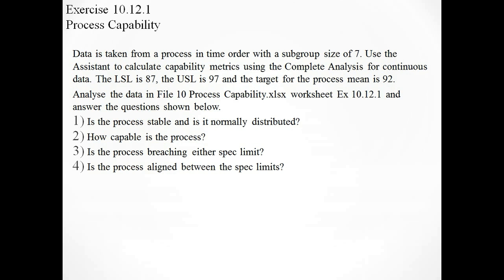Let's have a look at our process capability example question. This time we're taking exercise 10.12.1. And you can download the data set if you want to work along with this as well from rmk6sigma.com. So the scenario is, data is taken from a process in time order with a subgroup size of 7. Use the assistant to calculate capability metrics using the complete analysis for continuous data. The lower spec limit is 87, the upper spec limit from the customer is 97, and the target for the process mean is 92.